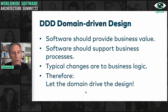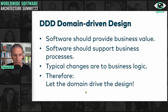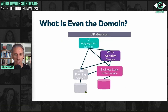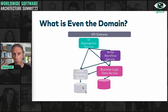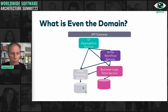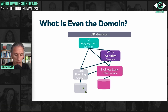Let's look at that architecture again. It turns out that I can't even tell what the domain is. There are a lot of technical decisions expressed here, and I'm not saying they are worthless or that they don't matter. However, if this is our architecture, it doesn't say anything about the domain whatsoever. Therefore, it's hard to judge whether it's a good architecture, because a good architecture should support changes to the business logic.